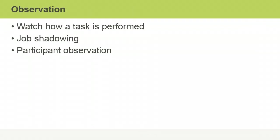Observation is a unique way of identifying requirements. Watching how a task or process is performed can make you aware of requirements you wouldn't have thought of otherwise. Examples of observation techniques are job shadowing and participant observation. Job shadowing is watching a person or group of people as they perform their job, while being a participant observer means trying out a task or process yourself.